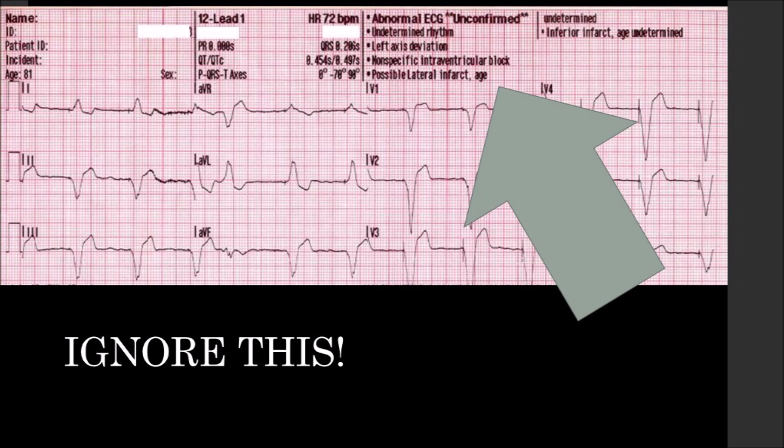Then let's look at the rate: 72 beats per minute. Did we palpate 72 beats per minute? We'll assume in this patient we did. Then we want to look at the QRS width as dictated up here — it's 0.20. So it's wider than 0.12, meaning this is what we would define as a wide complex rhythm. It's wide in V1, it's wide everywhere. Then we move down to the QRS axis.